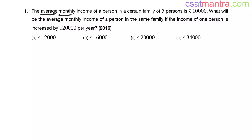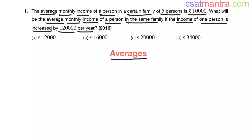The average monthly income of a person in a certain family of 5 persons is 10,000 rupees. What will be the average monthly income of a person in the same family if the income of one person is increased by 1,20,000 per year? This question is from averages chapter. It is asked in 2016.